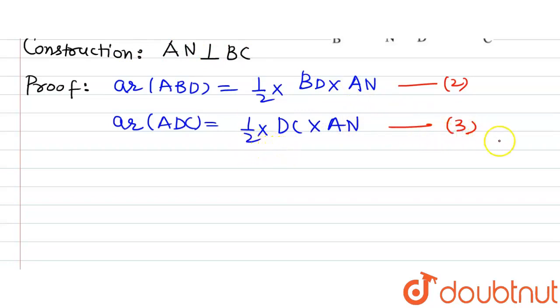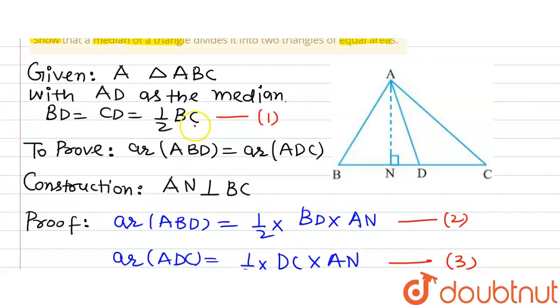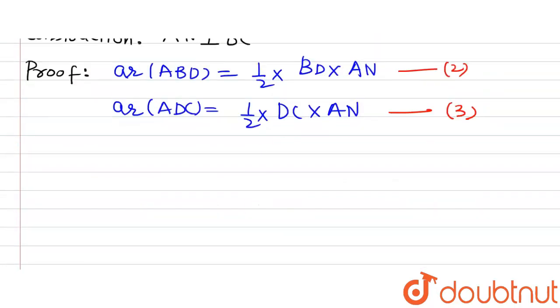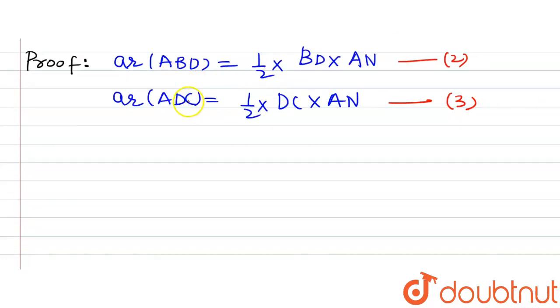From equations 1, 2, and 3, we observe that AN is common in both areas, and BD equals DC because AD is a median. This means area ABD equals area ADC. From equations 1, 2, and 3,